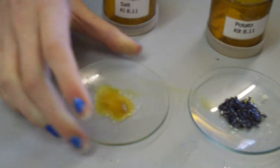If the food goes black, it has starch in it. If it stays the same, it doesn't.